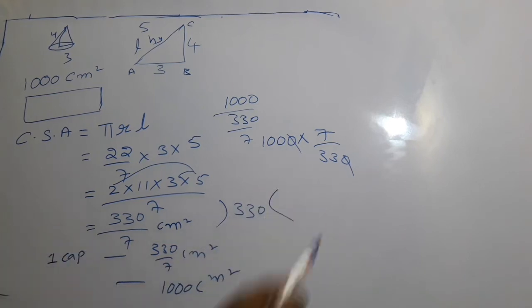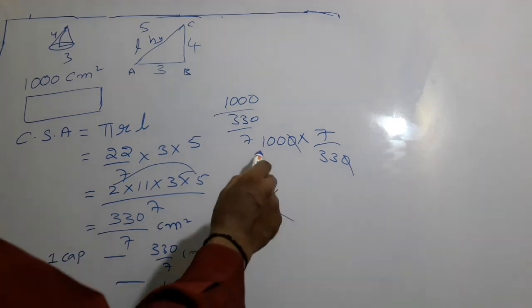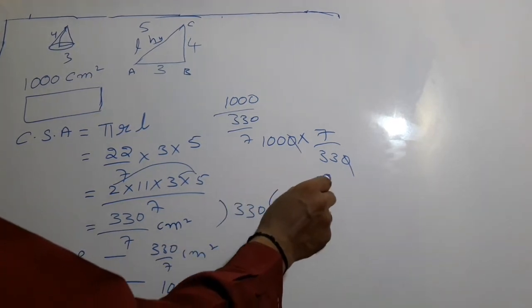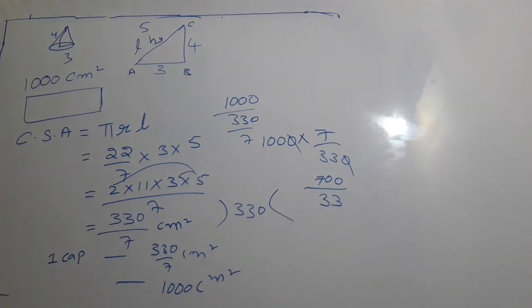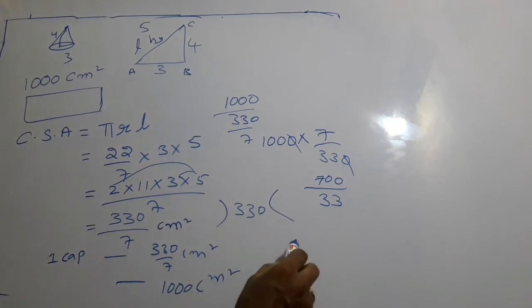So it becomes 1000 × 7/330. Cancel zeros: 100 × 7 = 700 divided by 33.